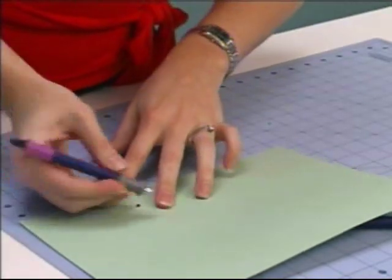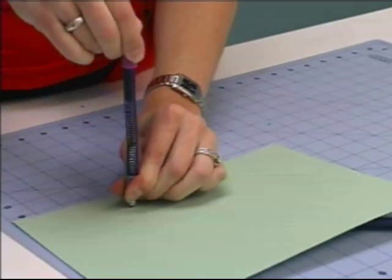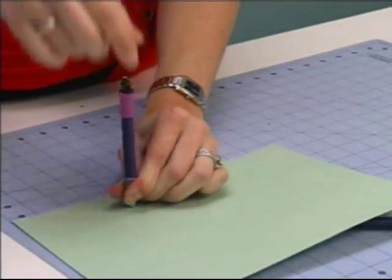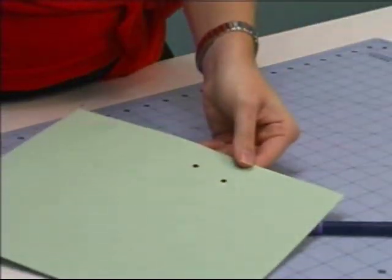So we're putting the eyelet setter in the eyelet shank, holding on with one hand, gripping the other end with the other, lifting up, and letting go. And notice we set the eyelet perfectly.